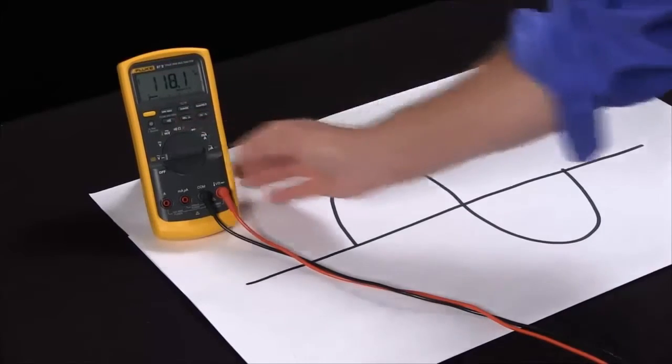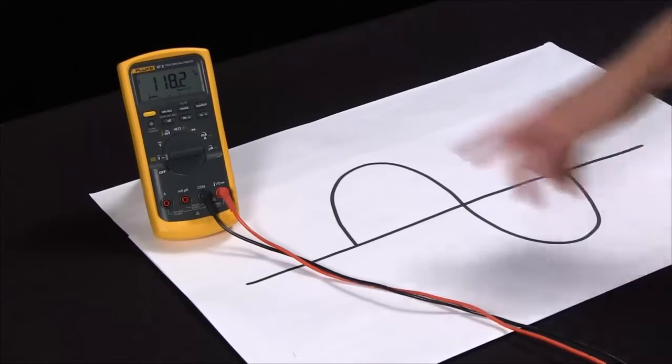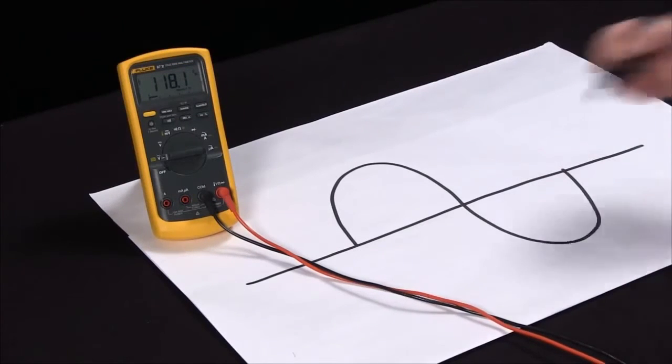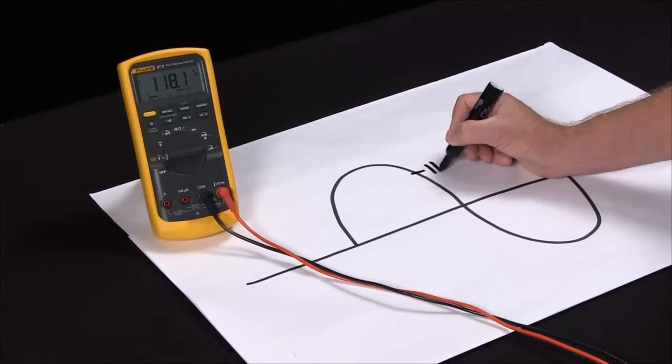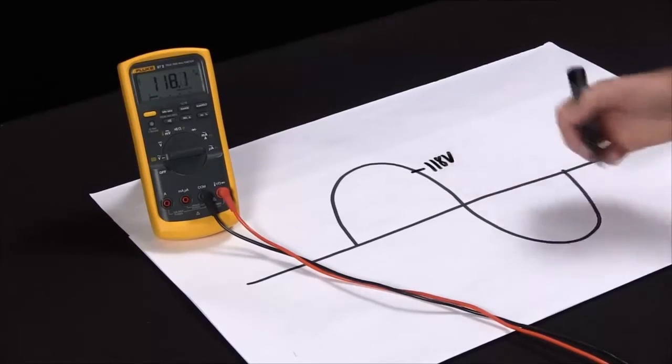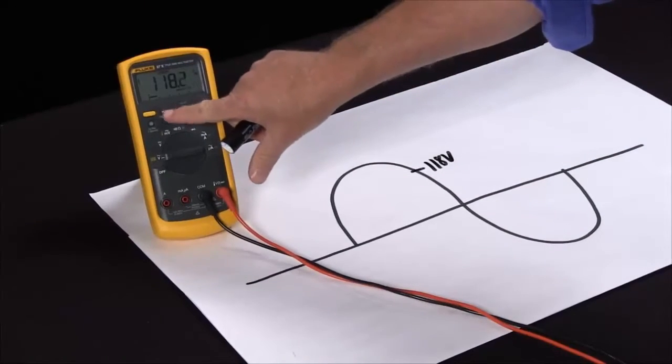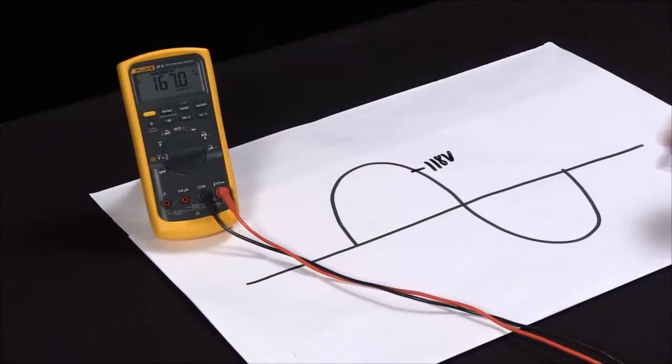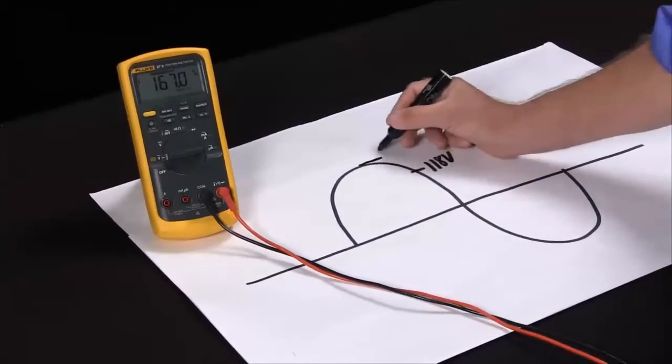But this function can be combined with a couple other ones. Right now we're looking at 118 volts, which is the RMS value of this sine wave. If I hit the peak min max mode, now with the fast peak mode, I can actually measure the peak at 167 volts.